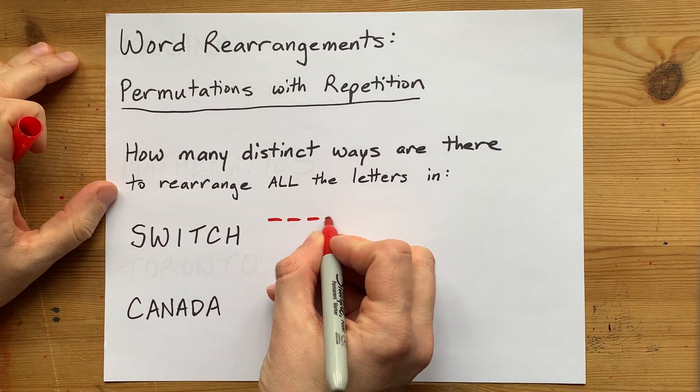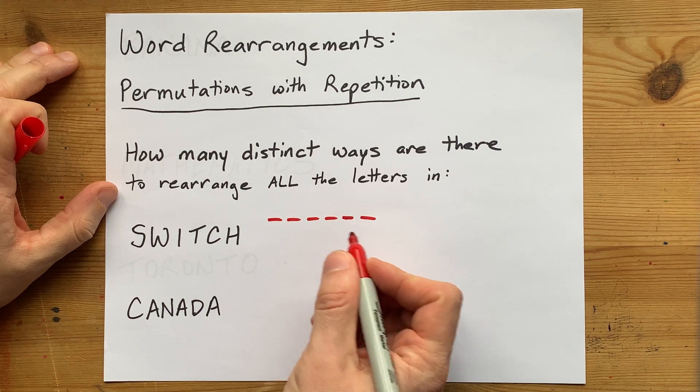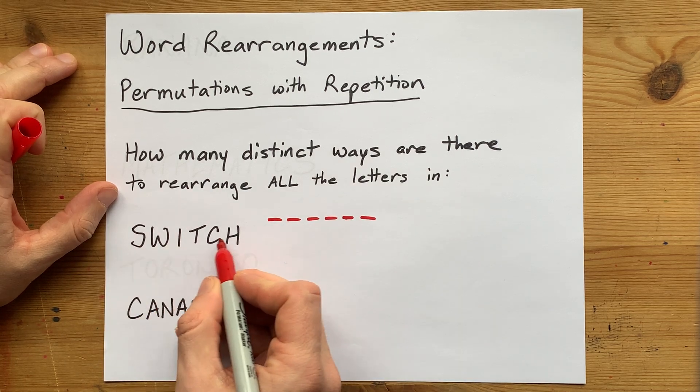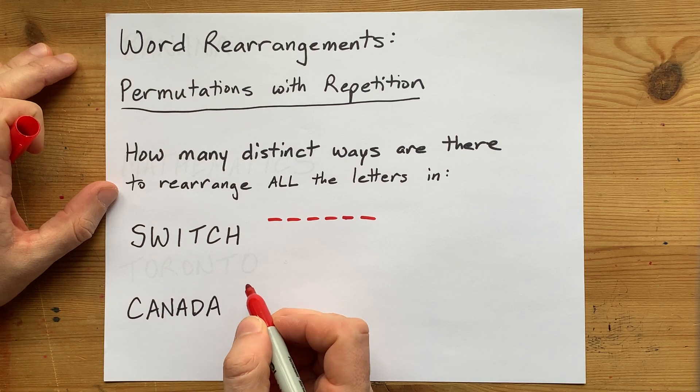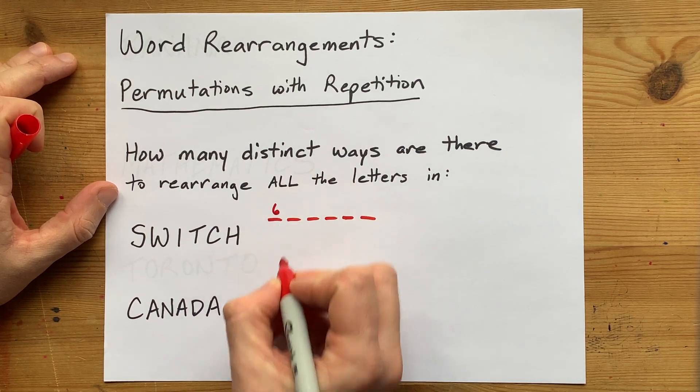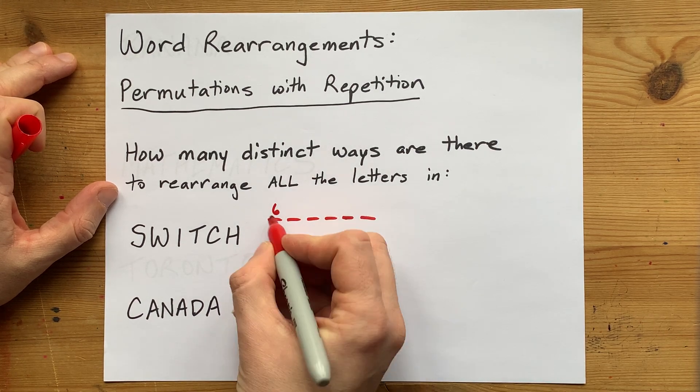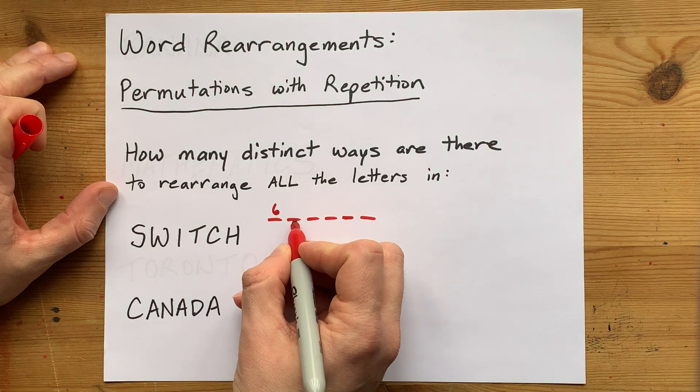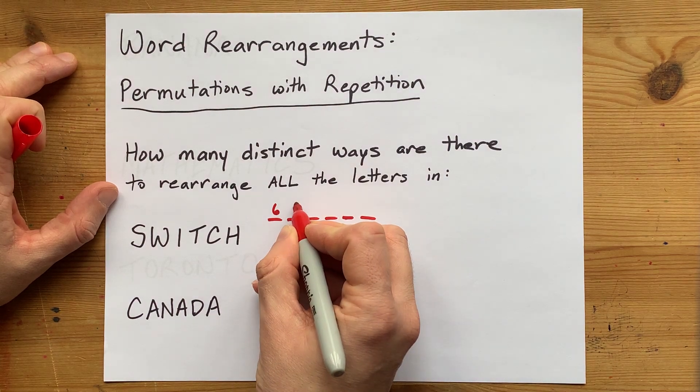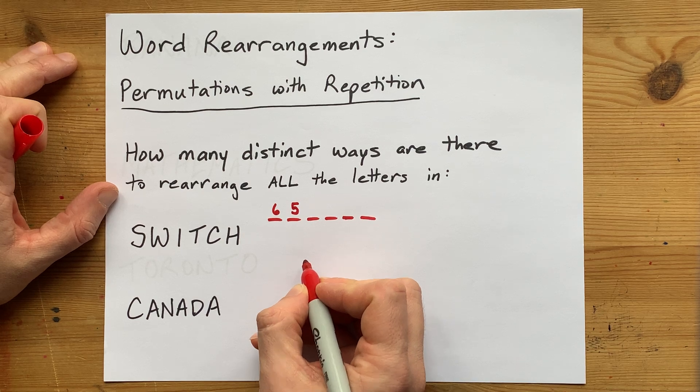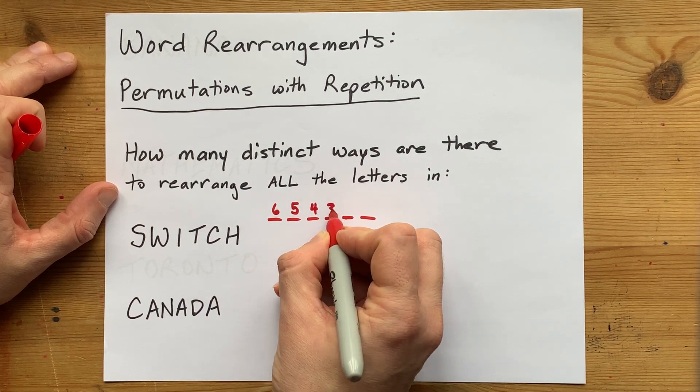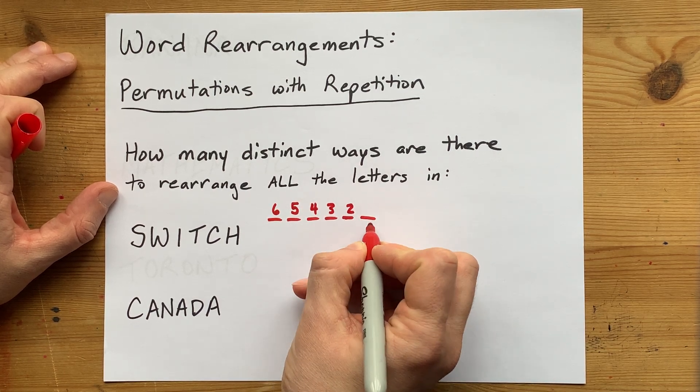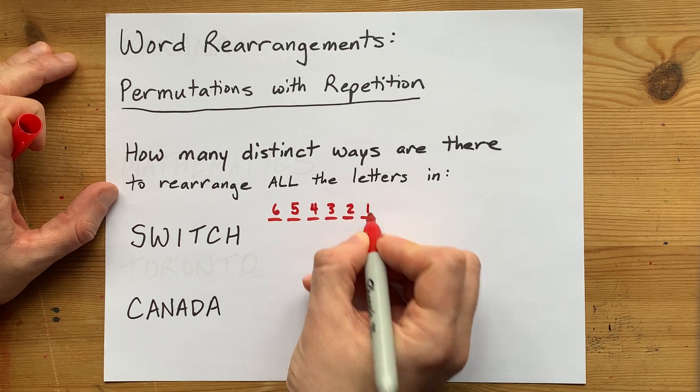One way to visualize this is to give yourself six blanks for the six letters. How many options do you have for that first letter that you choose? You have six options. How many letters do you have for the next option? You've already used up one of them, so you only have five options for the next blank, and four, and three, and two. By the time you get to the last letter, you only have one option.